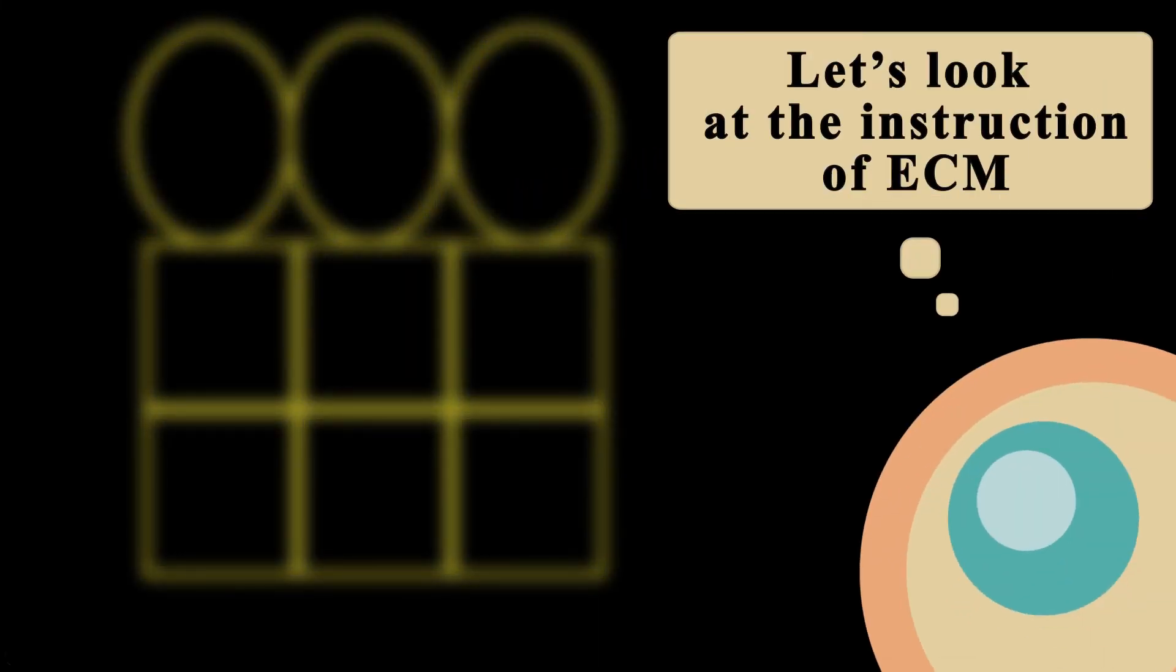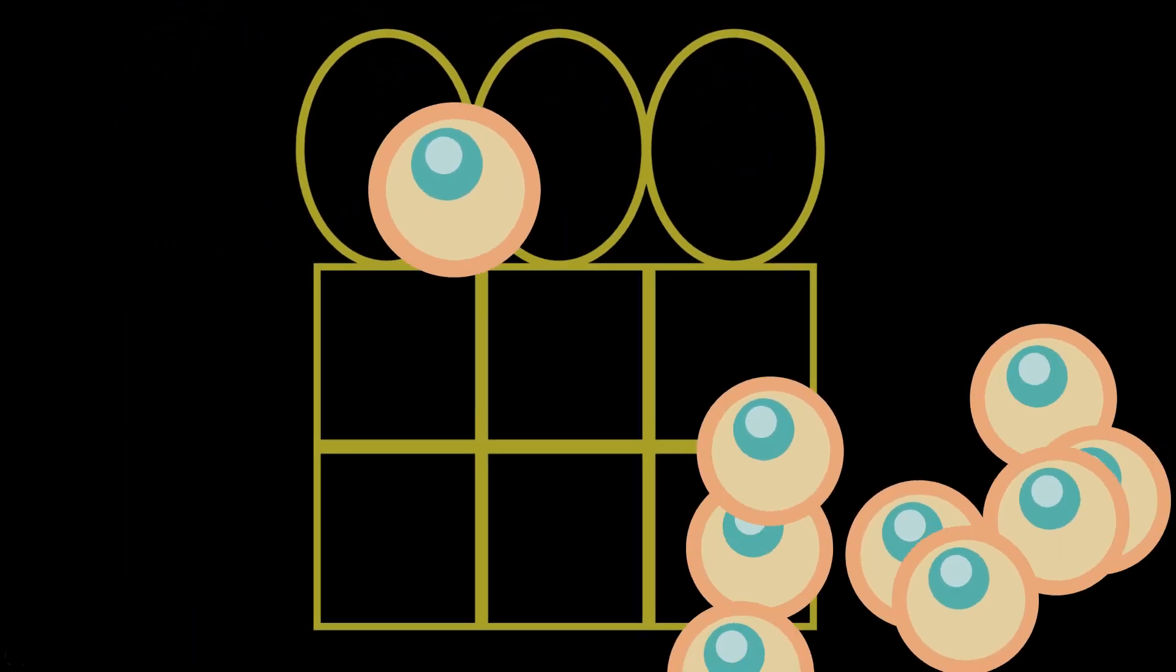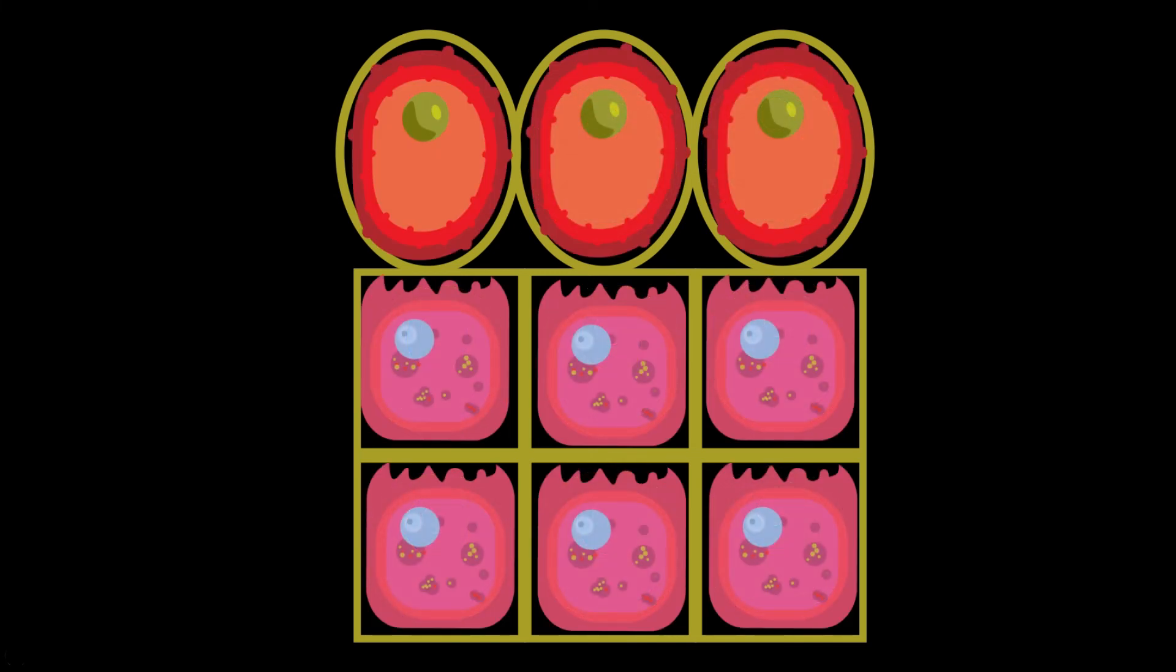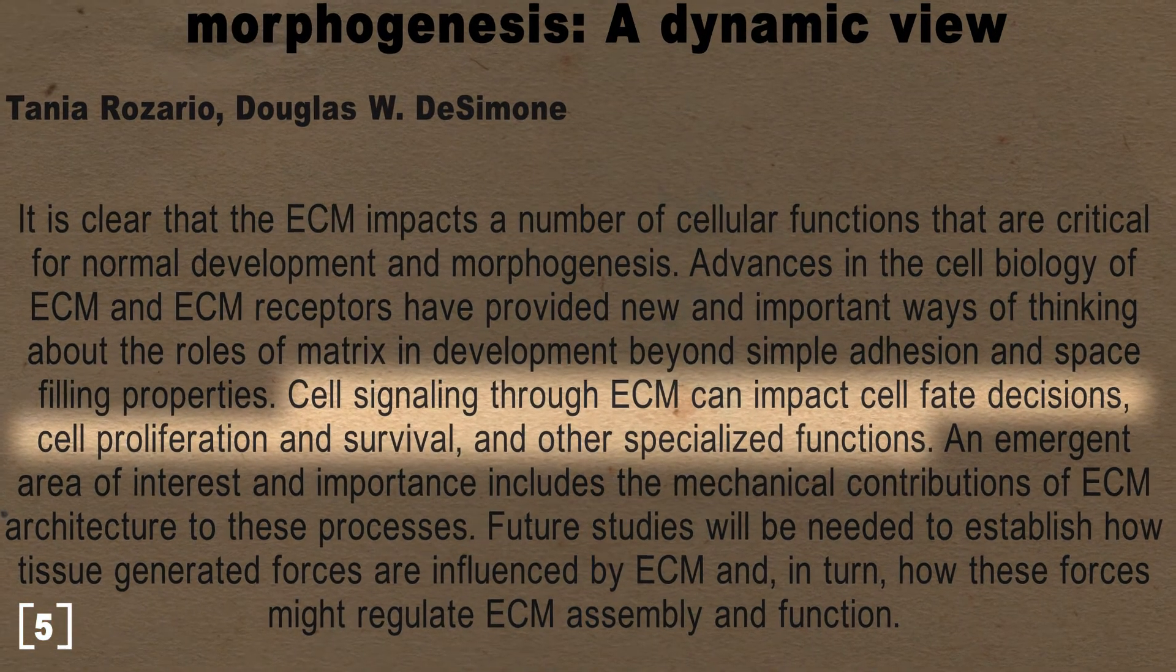When cells interact with this mature extracellular matrix, they can effectively read its biochemical structures and composition, which reflects the developmental origins and lineage of that tissue. Cells can interpret this developmental memory encoded in the matrix as a cue to guide their own differentiation, function, and behavior in a manner appropriate for the specific tissue type.